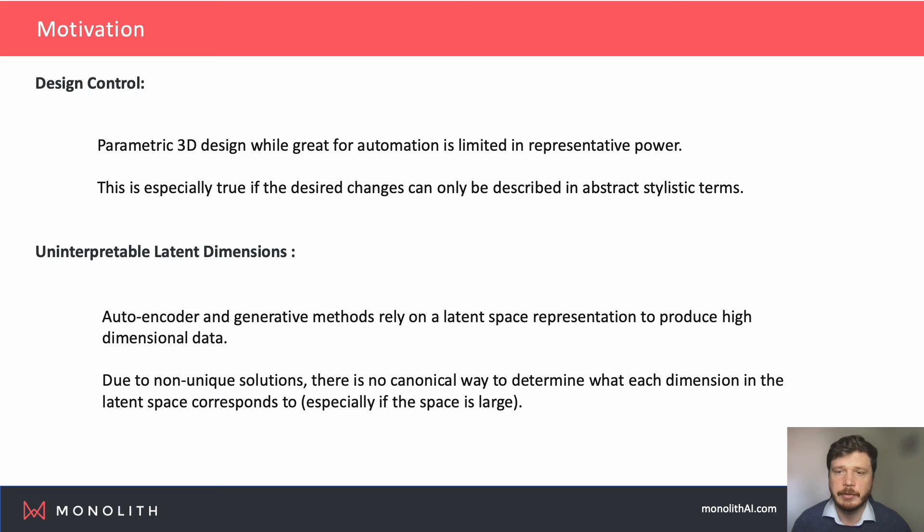As we have demonstrated at Monolith, deep learning models such as autoencoders are adept design manipulators and can obtain a rich parameterization space that can encode an entire dataset of designs. However, this enhanced parameterization ability comes at the expense of interpretability and control. Manipulating the latent space directly can lead to unpredictable results and there is no canonical latent space representation, meaning that training a new model might scramble any previous relationships between the latent space and final design.